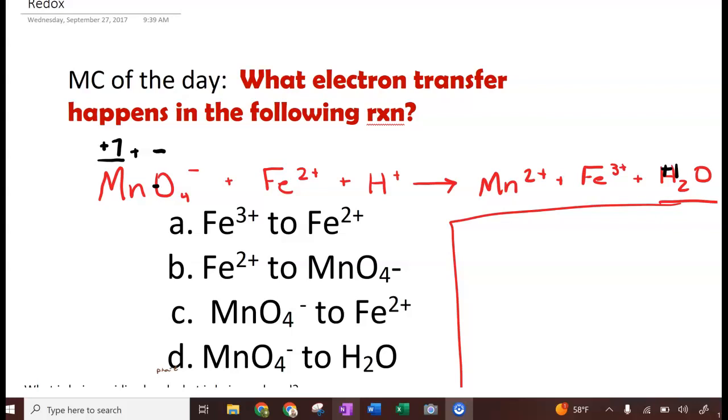So we start with a multiple choice question of the day. What electron transfer happens in the following reaction? There you see you have the permanganate ion. That's not a familiar one to most of you. We don't use it very much in honors chemistry. Permanganate ions react with iron 2 ions and hydrogen ions. That goes to form the manganese 2 ion and iron 3 ions and water is formed.